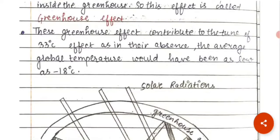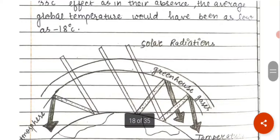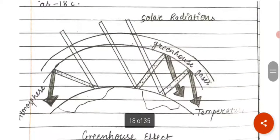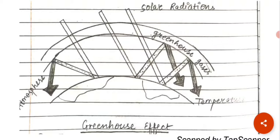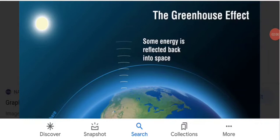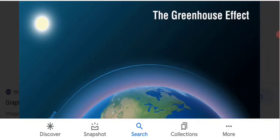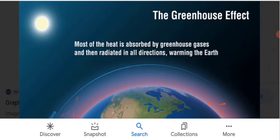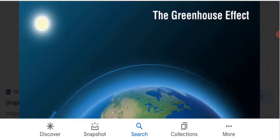This greenhouse effect contributes to a 33 degree Celsius effect — in the absence of greenhouse gases, the average global temperature would be minus 18 degrees Celsius. Sunlight reaches the surface, some energy is reflected back into space, some is re-radiated, and most of the heat is absorbed by the greenhouse gases and then radiated in all directions, which keeps the surface of the earth warm.